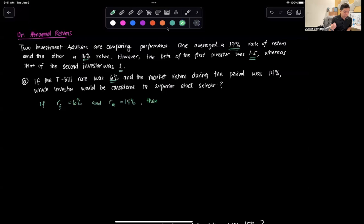What we know is if the risk-free rate, which I denote as RF, is equal to 6%, and the market return RM is 14%, then let's use alpha to denote the abnormal return. For the first investor, alpha 1 is equal to—remember, the formula that we're going to use starts with the rate of return that was averaged by that investor, so that's 19%, or 0.19, minus the risk-free rate, which is 6%, so that's 0.06, plus...